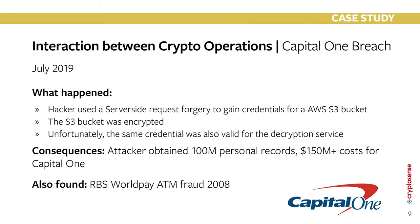A concrete example is the Capital One breach in July 2019. Capital One is a big user of AWS and had migrated key applications there. Most people know AWS S3, which allows storing large amounts of data via a simple API. To store sensitive data in S3 buckets, you'd typically encrypt them and also make the bucket non-public, requiring a credential for access. Capital One followed this policy — doing both.